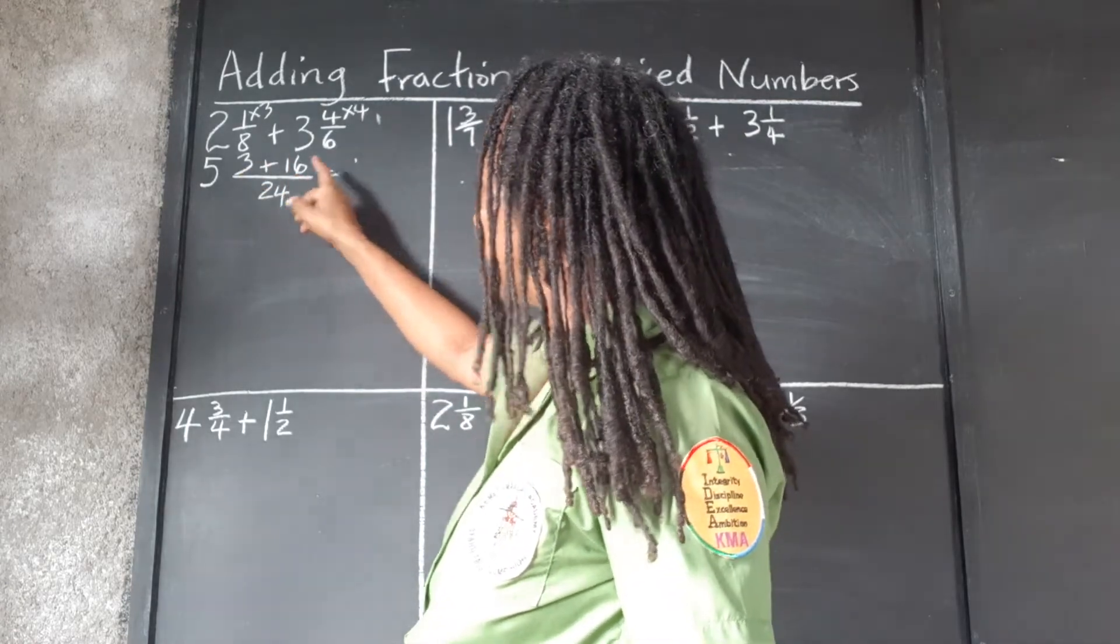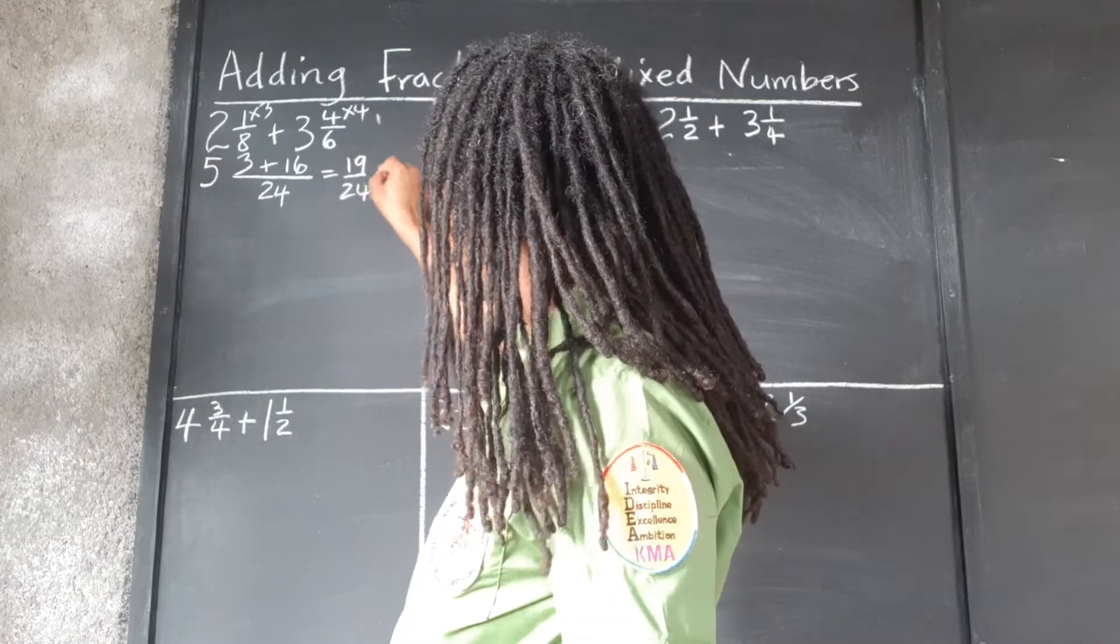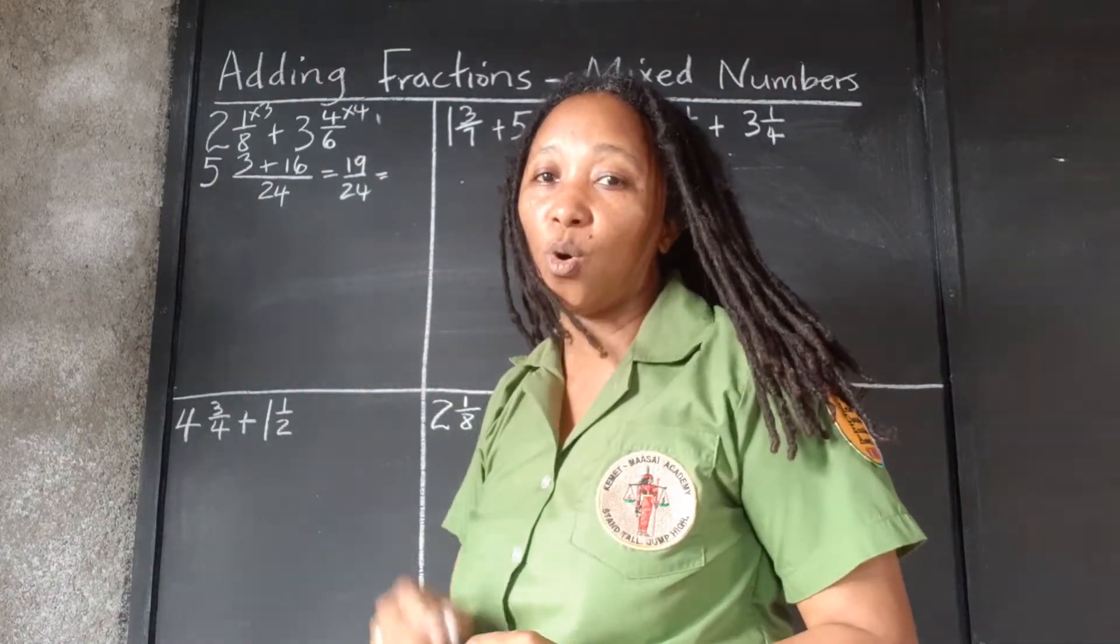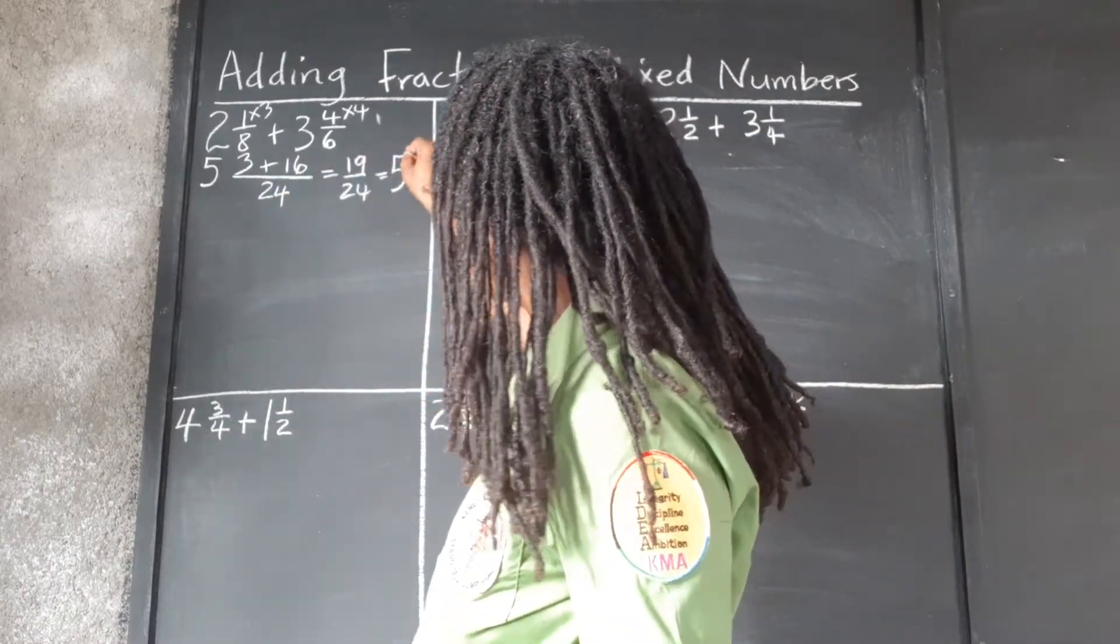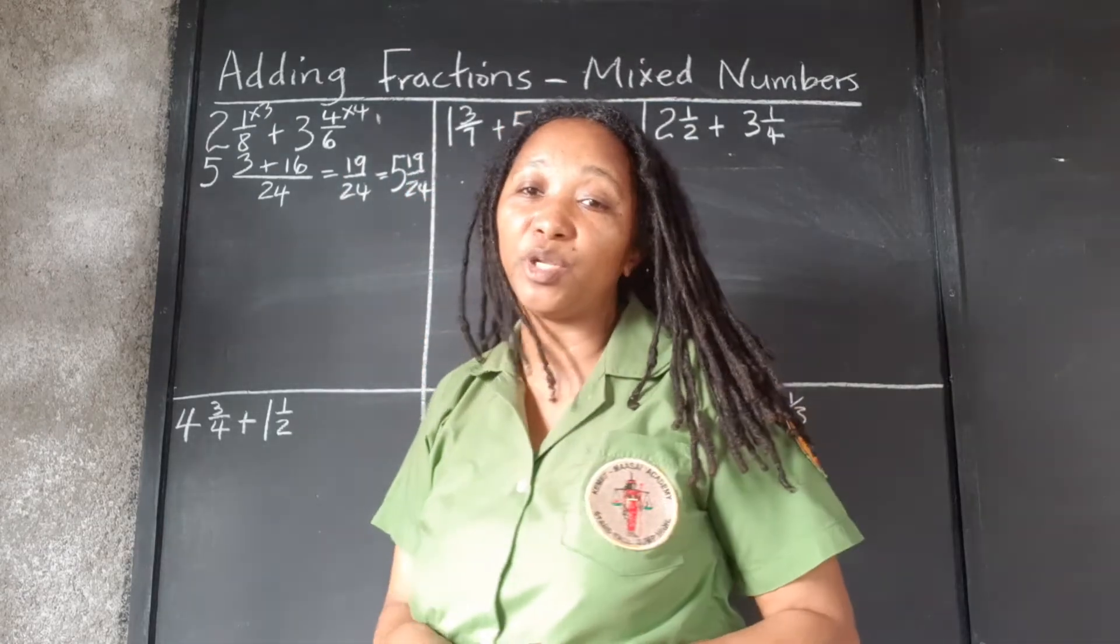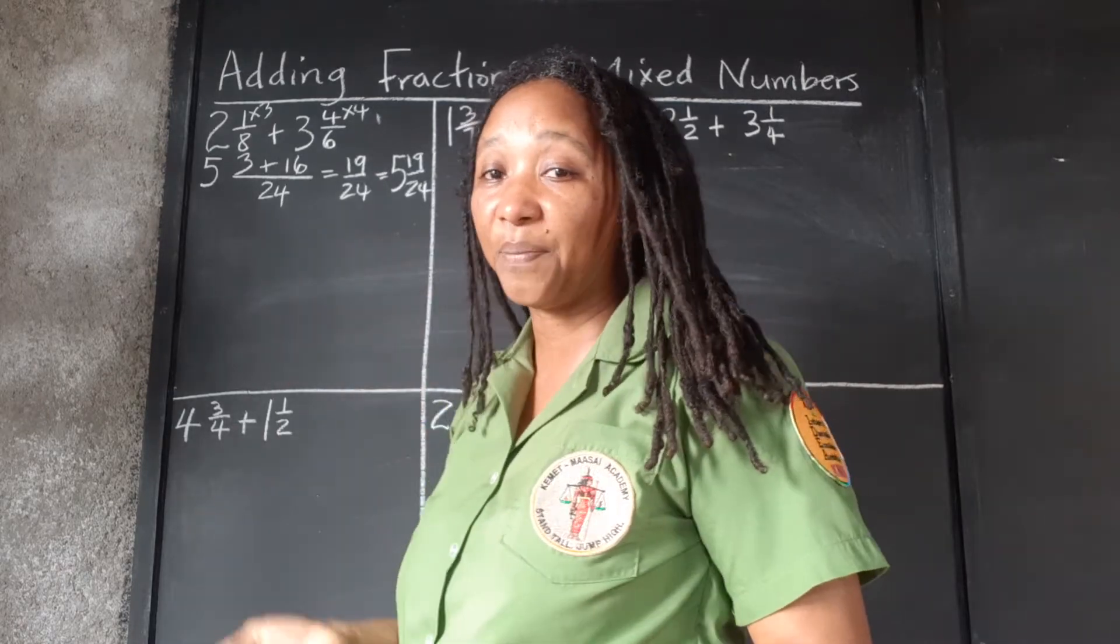3 plus 16, that's 19 over 24. And finally, we add back the 5. The whole number 5 that we have put to the side, we put that back with the 19 over 24. And 19 over 24 cannot be reduced any simpler. That's the simplest way it can be expressed.